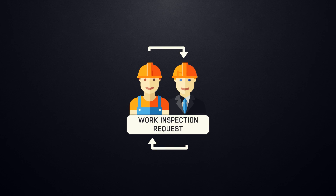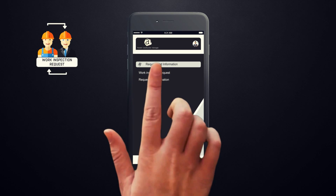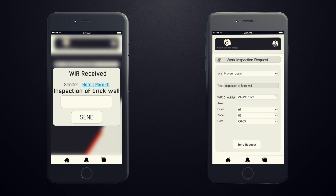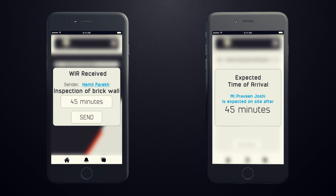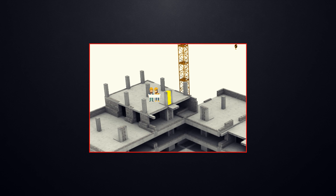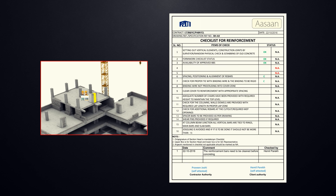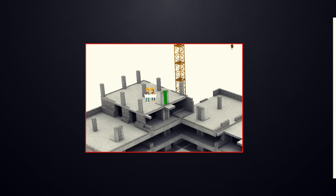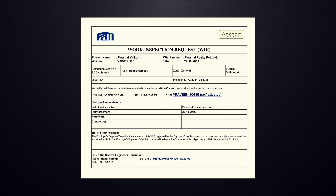The online Work Inspection Request feature integrates the site inspection processes. The inspecting authority is required to attend the request by sharing their expected time of arrival on site. After reaching, the respective checklist of items to be inspected is filled, and comments if any are mentioned. On approval, the process is documented and put into records.